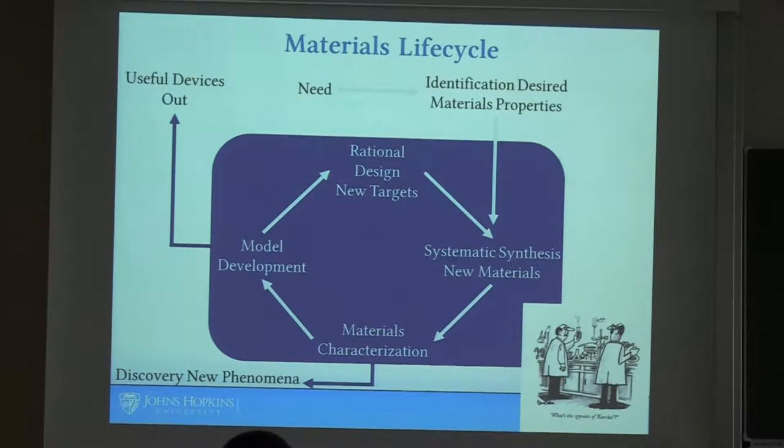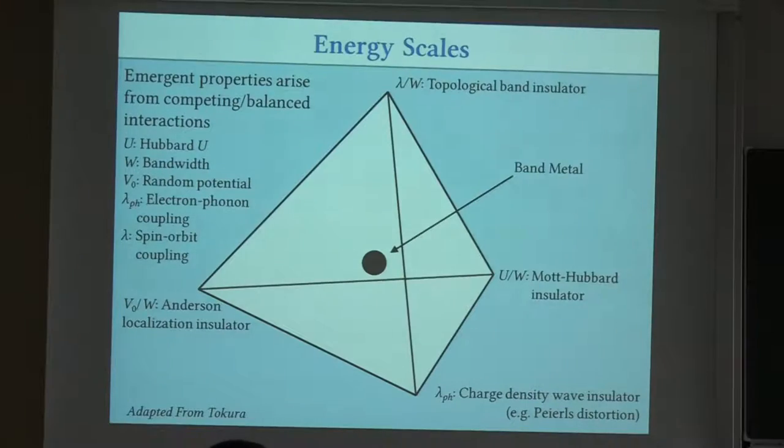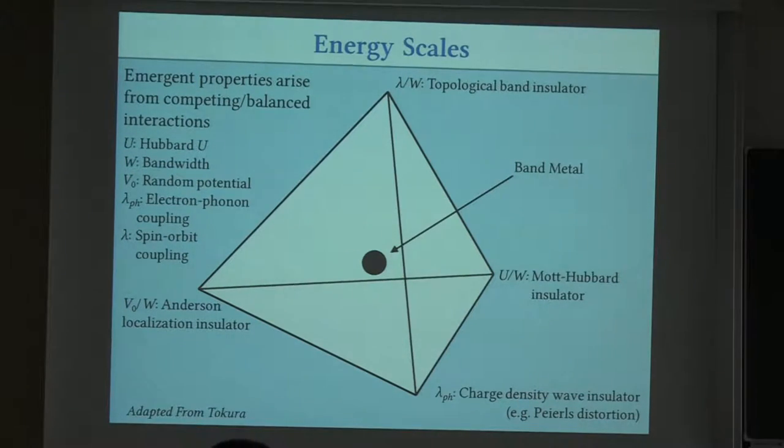And then you enter this now sort of famous loop where you basically make things and characterize them, develop models, use that to predict new ones if the models are any good with predictive power. And you do this many times. If you're lucky, you get useful devices out, but also you have this opportunity down here that you discover new things - what's the opposite of Eureka? Things you didn't expect.